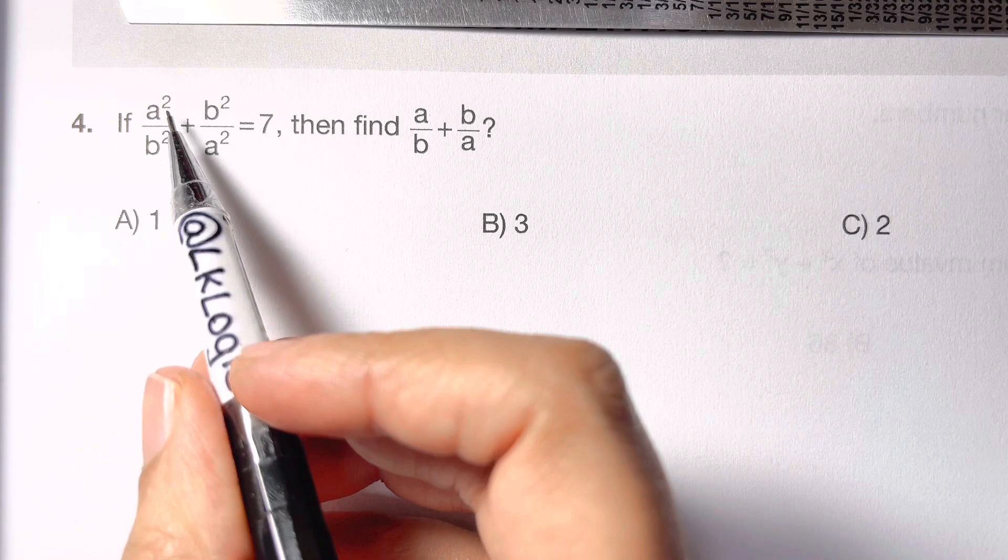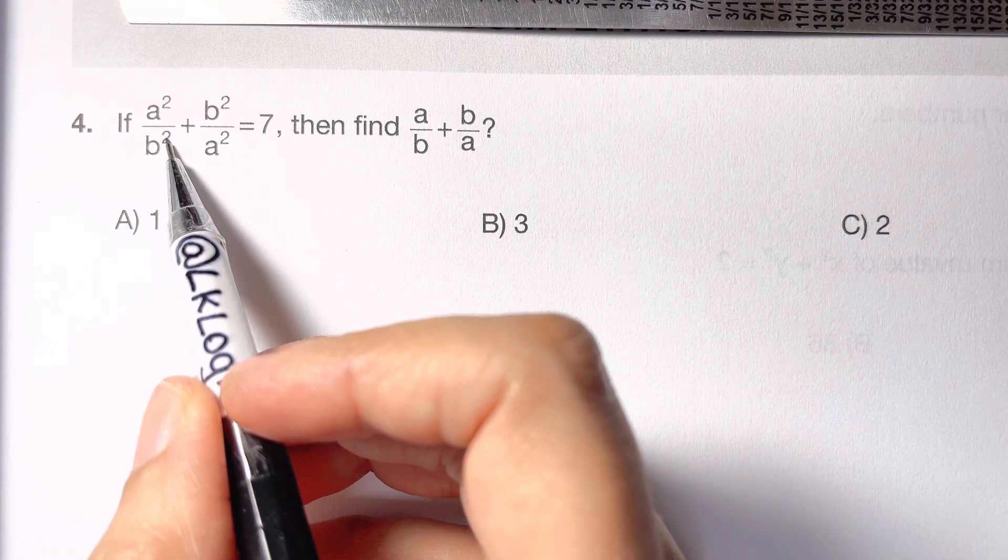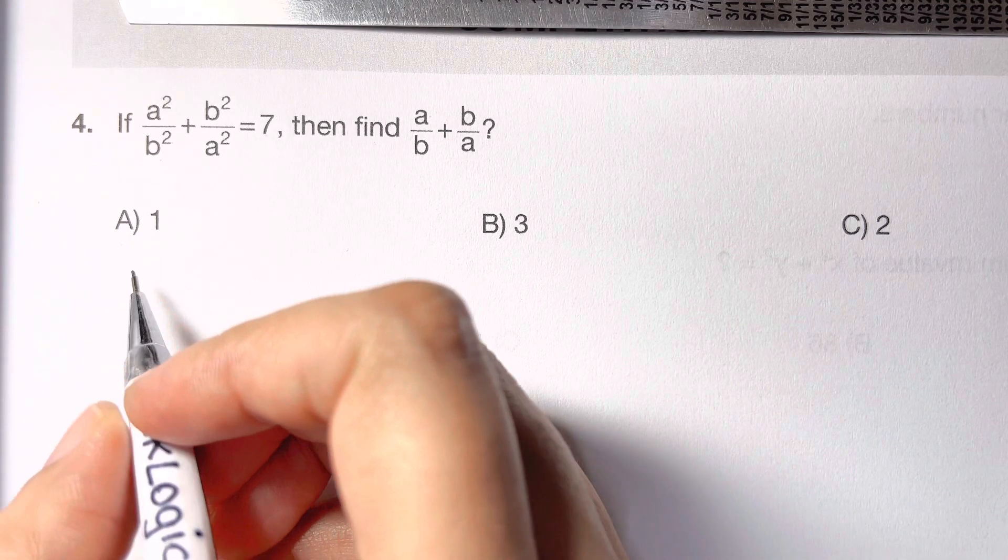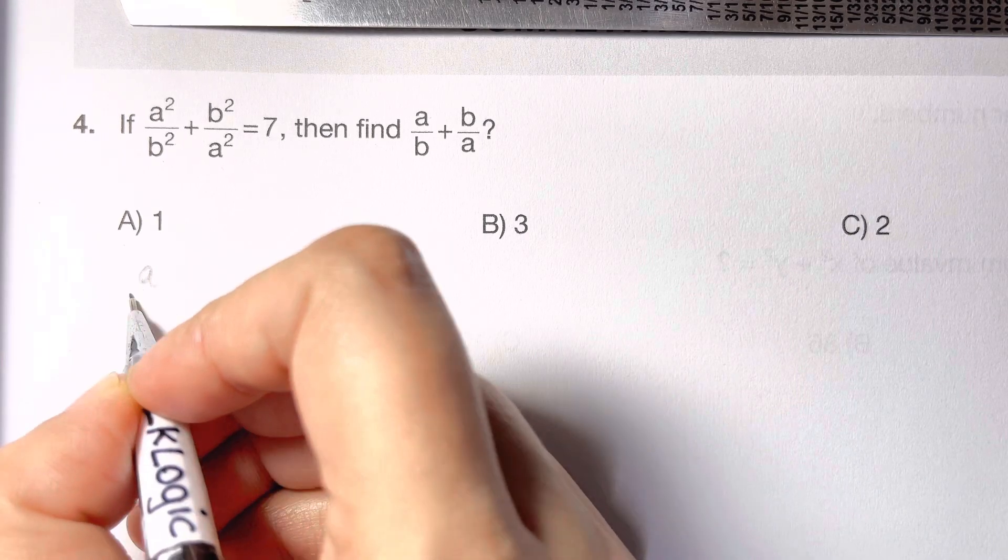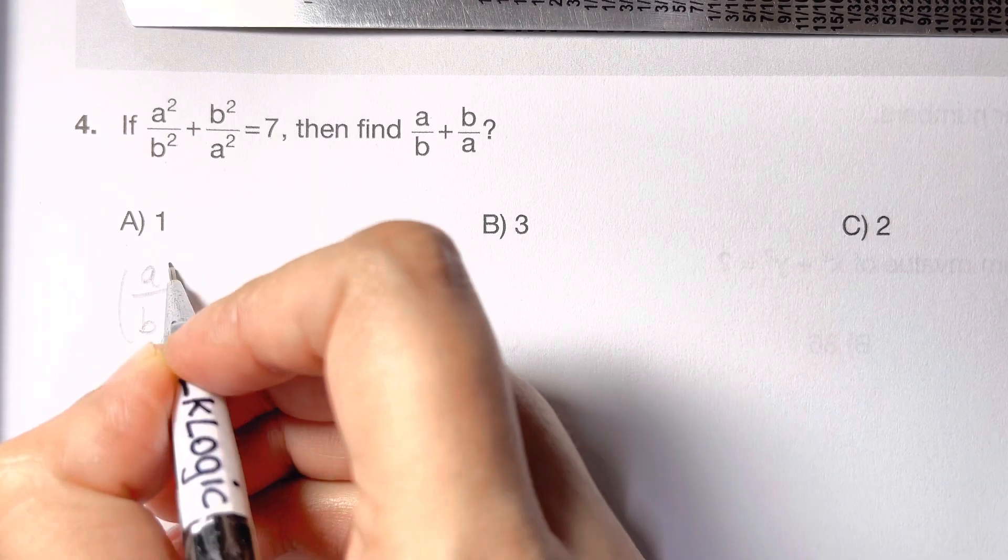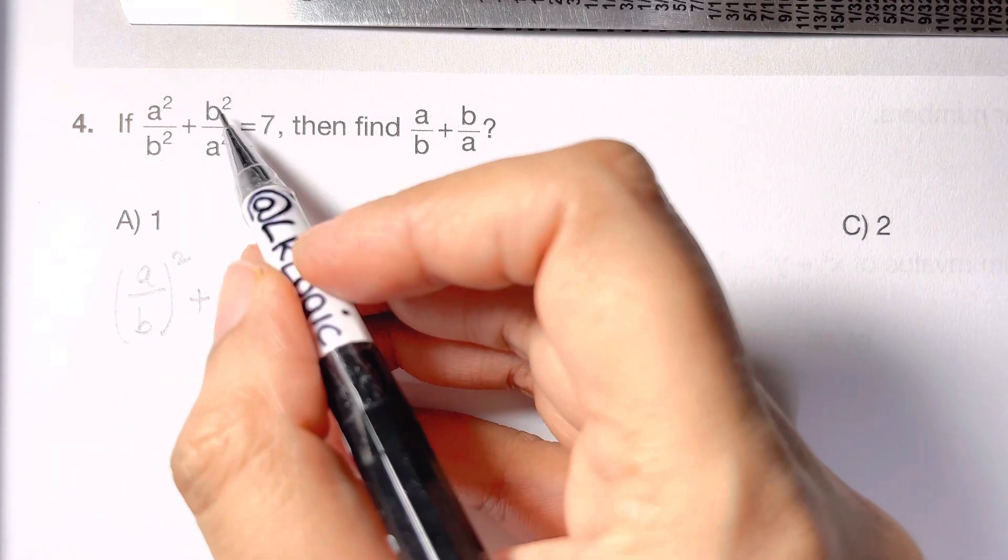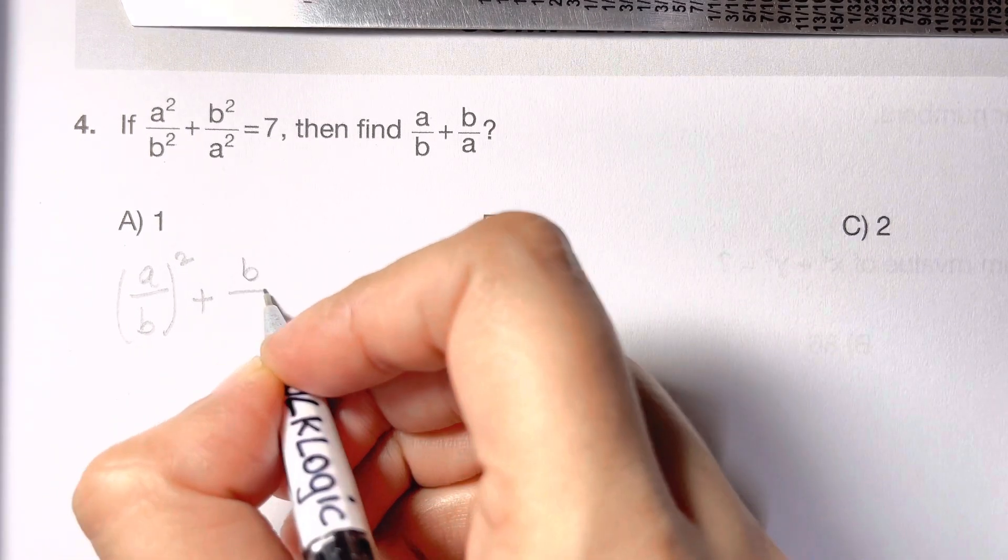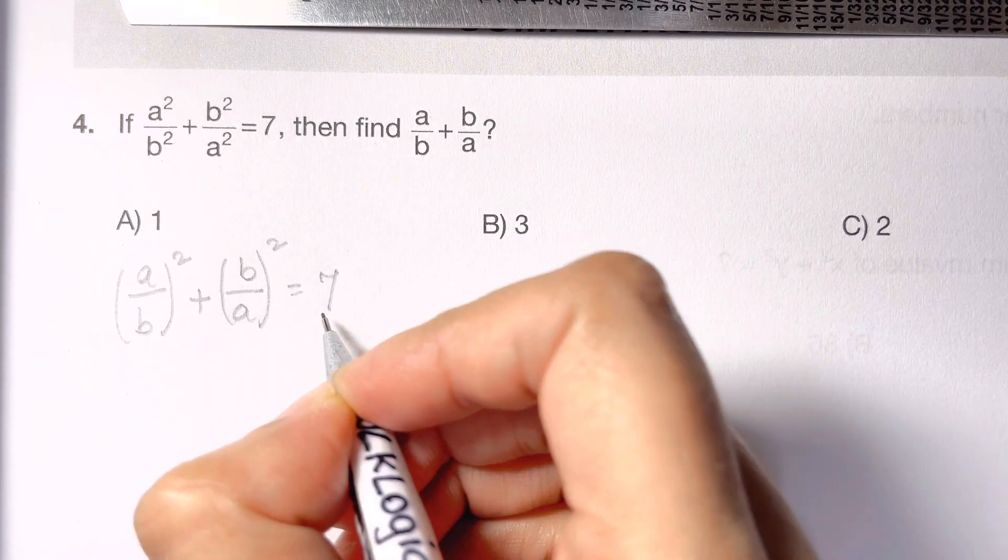Here what we're going to do is a² over b², you have same exponents, that is 2. So we're going to write it as (a over b)² plus (b over a)² which equals 7.